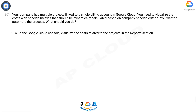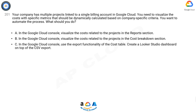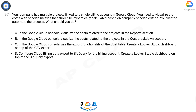A: In the Google Cloud console, visualize the costs related to the projects in the Reports section. B: In the Google Cloud console, visualize the costs related to the projects in the Cost Breakdown section. C: In the Google Cloud console, use the export functionality of the cost table and create a Looker Studio dashboard on top of the CSV export. D: Configure Cloud Billing data export to BigQuery for the billing account and create a Looker Studio dashboard on top of the BigQuery export.